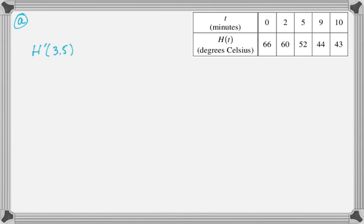So to do that, what you want to do is look at the table and you find the number immediately to the left of 3.5, the number immediately to the right of 3.5, and then we just do the slope of the secant line through those. So in the table, you can see we're going to do H(5) minus H(2) all over 5 minus 2, and then we can read the values off.